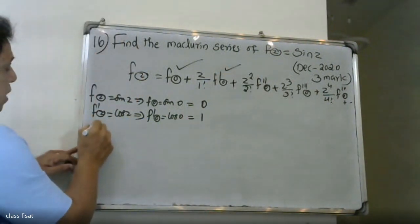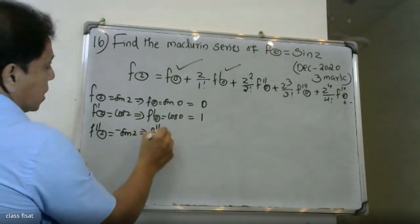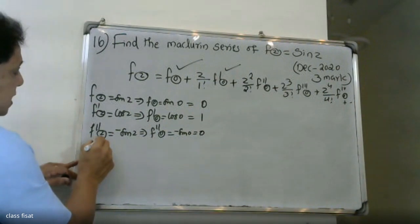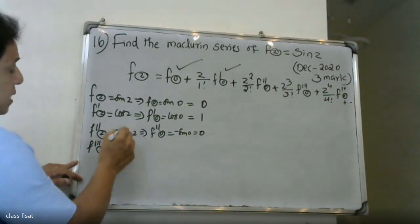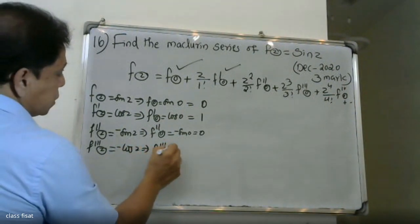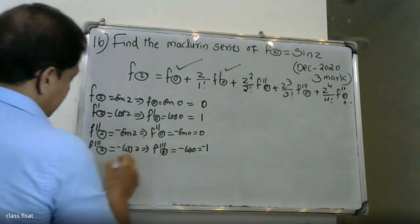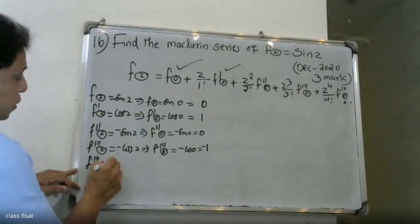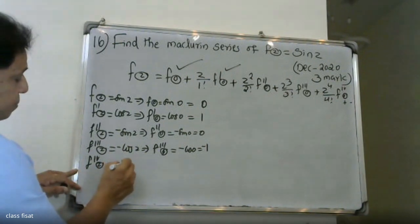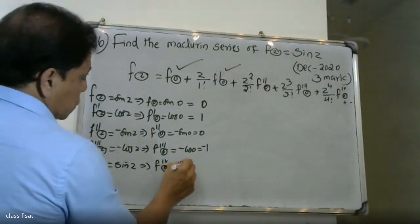F double dash is the second derivative: minus sine z. At z equals 0, f double dash of 0 equals minus sine 0 equals 0. F triple dash is minus cosine z, so f triple dash of 0 equals minus cosine 0 equals minus 1. The fourth derivative is minus times minus sine z equals sine z, so f fourth derivative of 0 equals sine 0 equals 0.